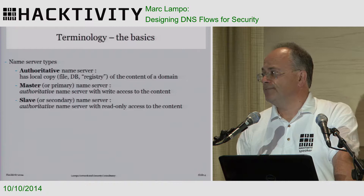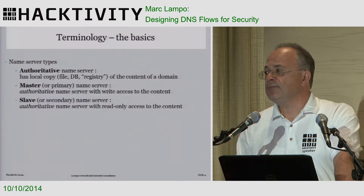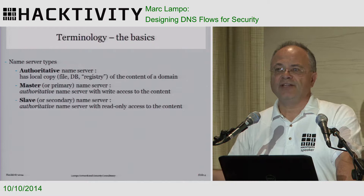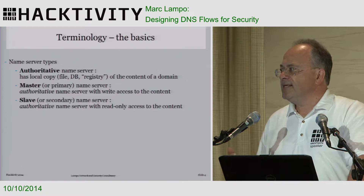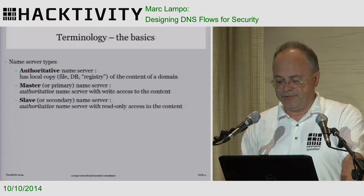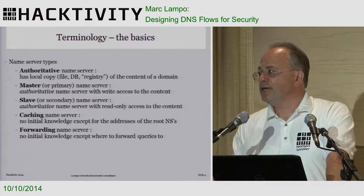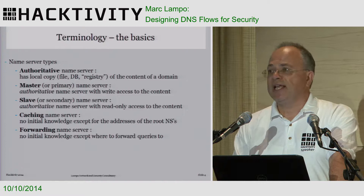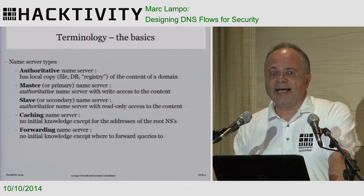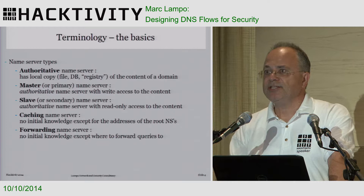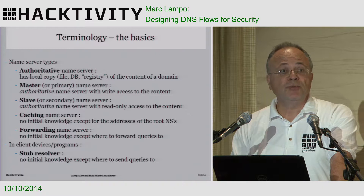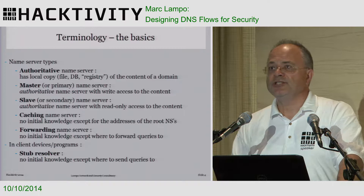The authoritative name servers provide content to this huge distributed worldwide database. The other side — the side that asks questions — is also called a name server. There you have the caching name server, which doesn't know content; it only knows where the root name servers are. The forwarding name server knows even less — it only knows which caching name server to address for replies. And the client programs use a stub resolver library to ask questions to the caching or forwarding name server.